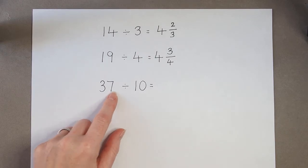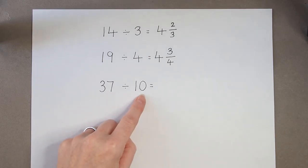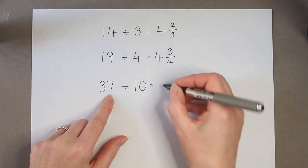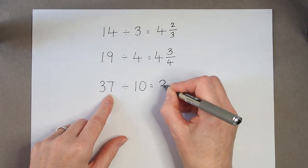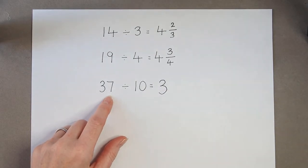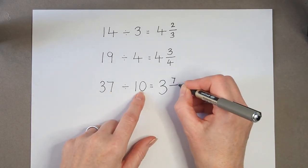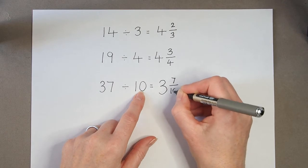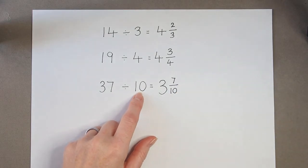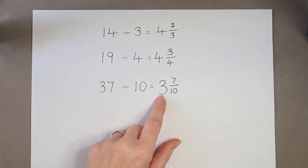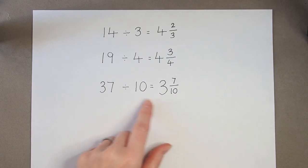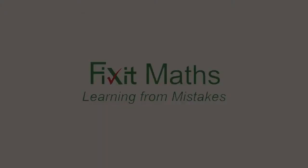And 37 divided by 10. 37 divided by 10 is 3 because 3 tens are 30. And that means I've got 7 left over. And I'm counting in groups of 10. So I've got 7 out of the 10 that I need for a group. So my answer is 3 and 7 tenths.